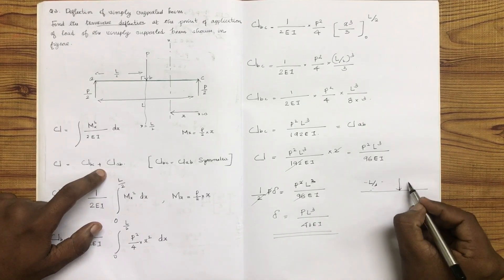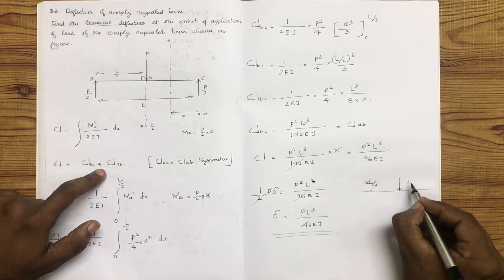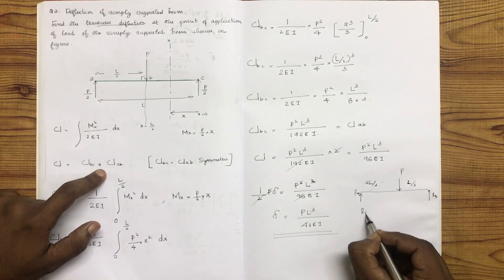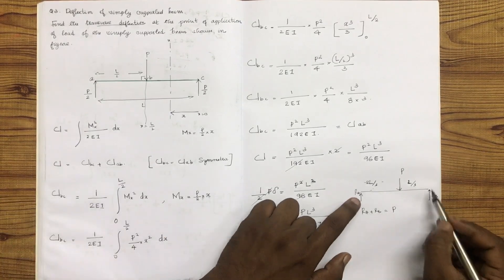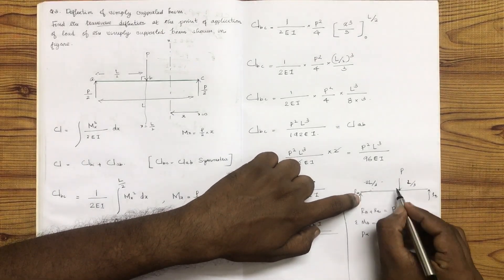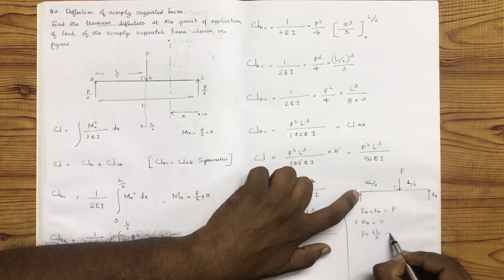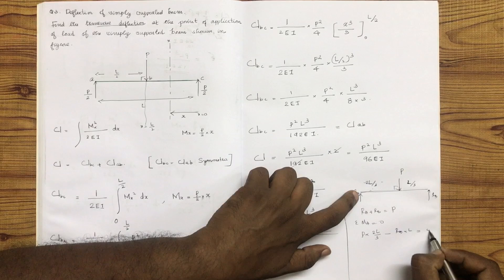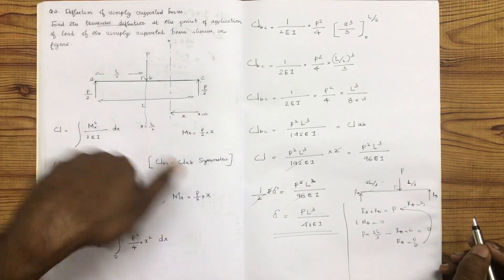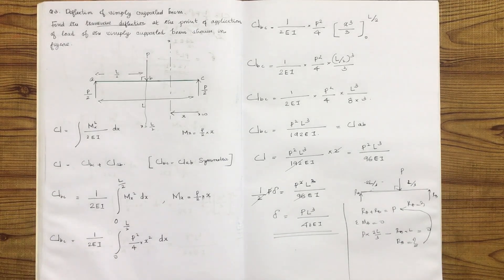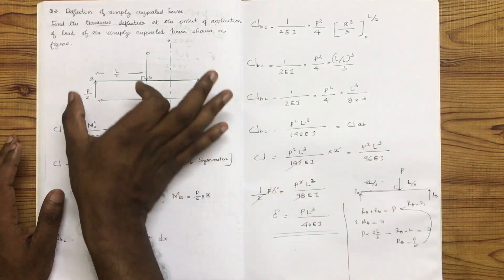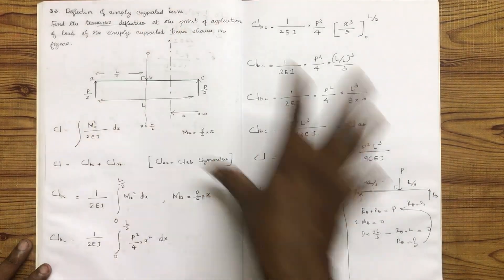Next problem: a beam with load P placed at L by 3 from one end and 2L by 3 from the other. The reactions are RA and RB. The sum of vertical forces gives RA plus RB equals P. Taking moments to solve for each reaction.